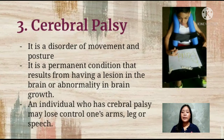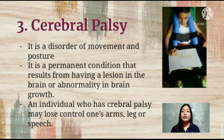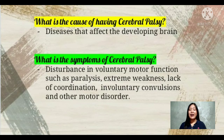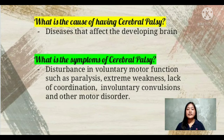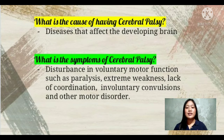Now let's move to cerebral palsy. It is a disorder of movement and posture. It is a permanent condition that results from a lesion in the brain or abnormality in brain growth. An individual who has cerebral palsy may lose control of one's arms, legs, or speech. The cause is a disease that affects the developing brain. Symptoms include disturbance in voluntary motor function such as paralysis, extreme weakness, lack of coordination, involuntary convulsions, and other motor disorders.